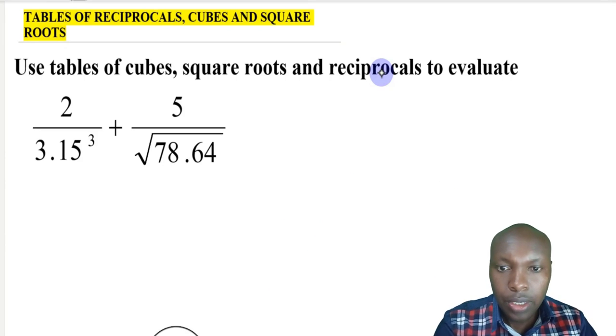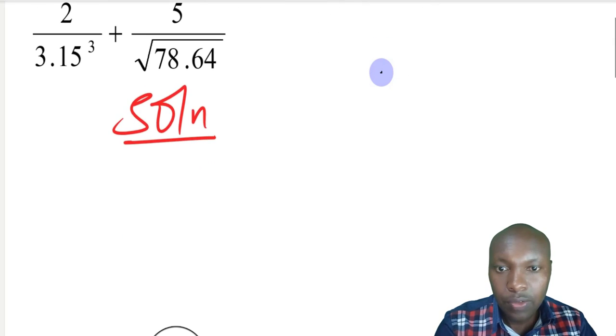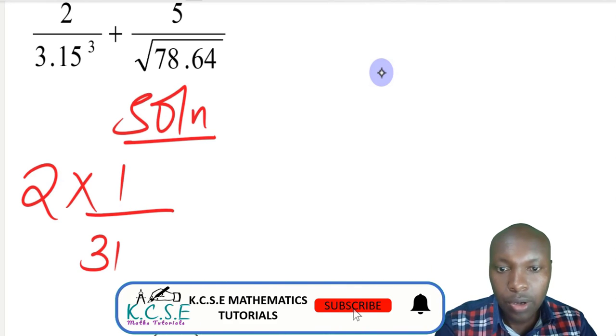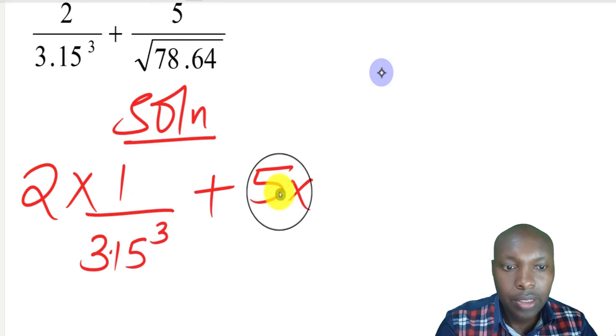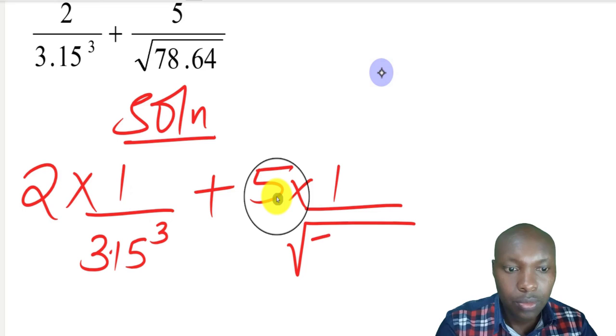To begin, we shall split these two numbers. 2 divided by 3.15 cubed, when you split that, you get 2 multiplied by 1 divided by 3.15 cubed. Then plus, when you split this, you get 5 multiplied by 1 divided by the square root of 78.64. That is the first step.